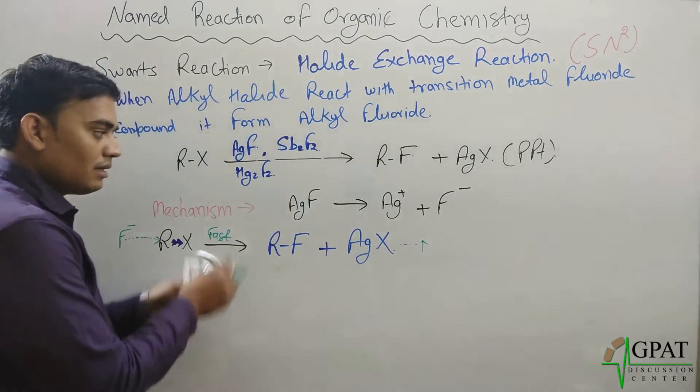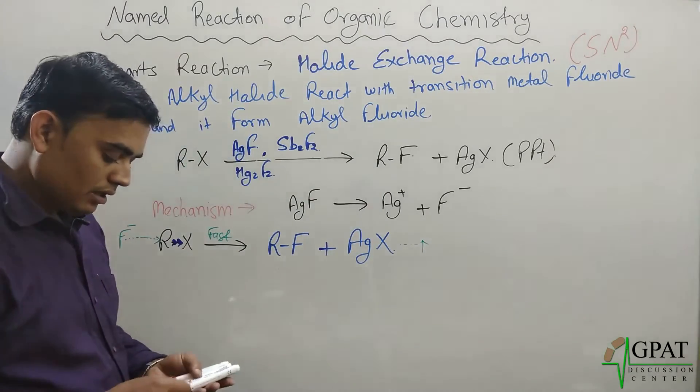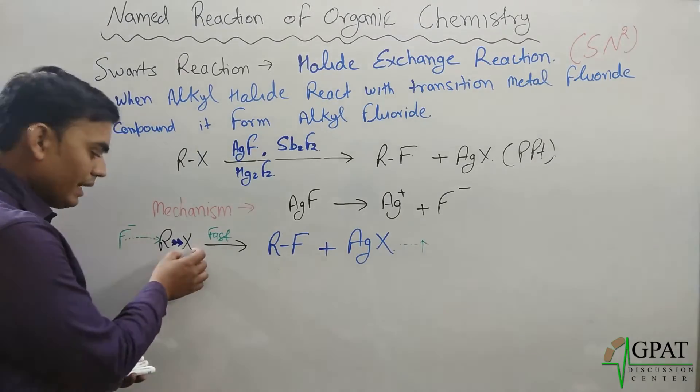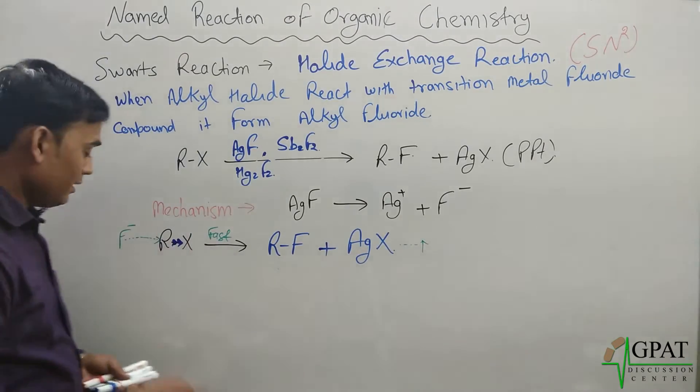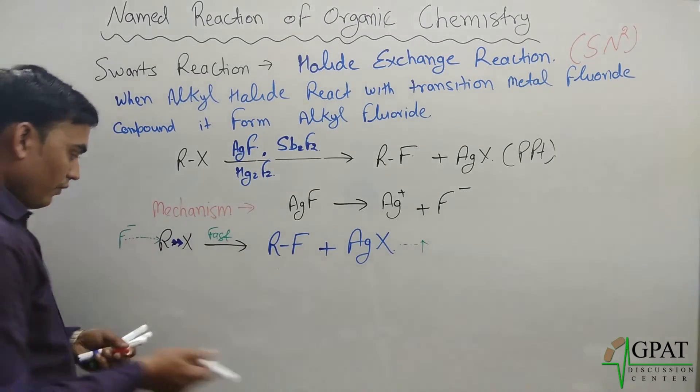So this is the basic Swarts reaction. Now, this halide may be either chloride, bromide, and iodide. Because fluorine will attack here. Now, if you take the example.